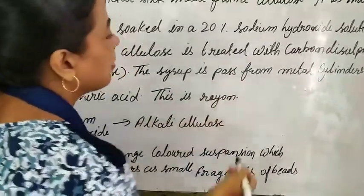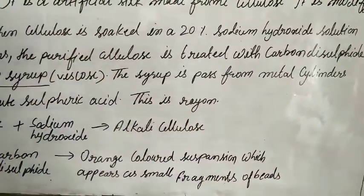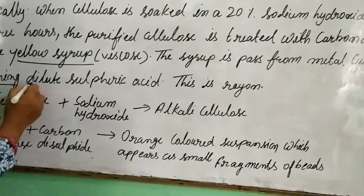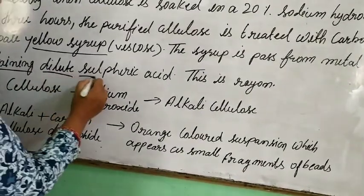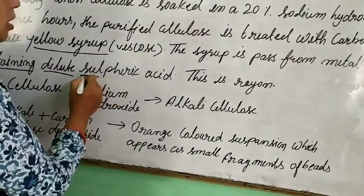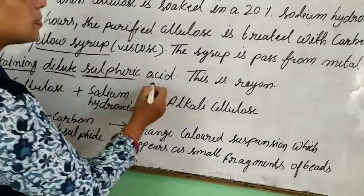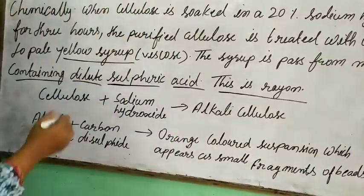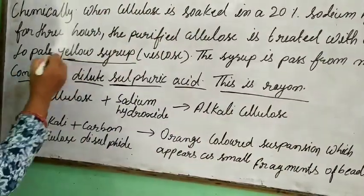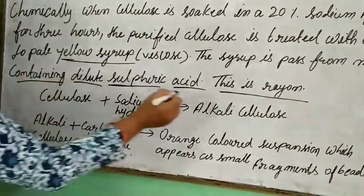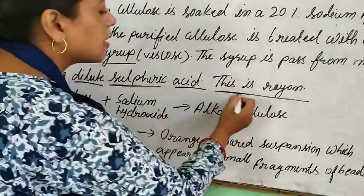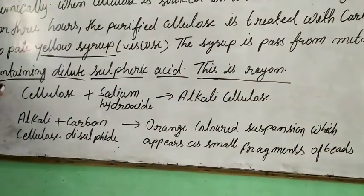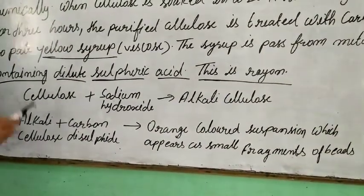The yellow syrup is viscous and is used to make Rayon. The syrup is passed through a metal cylindrical container containing dilute sulfuric acid. This produces Rayon.